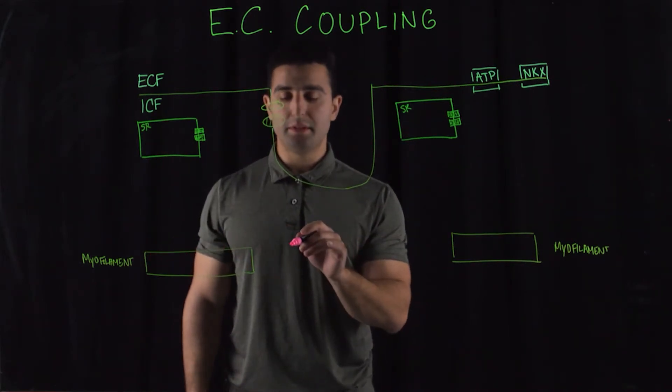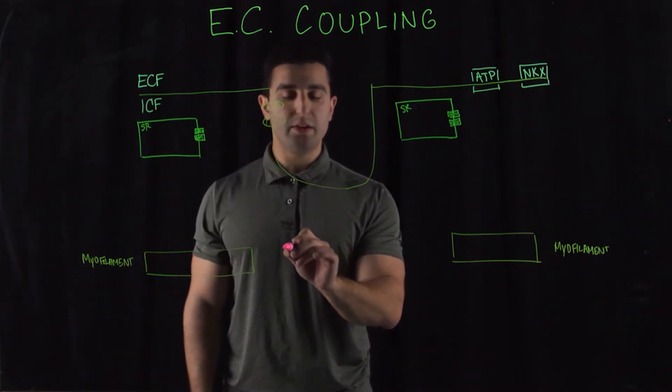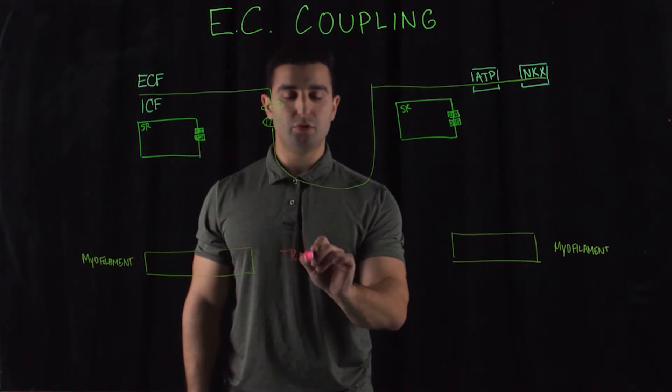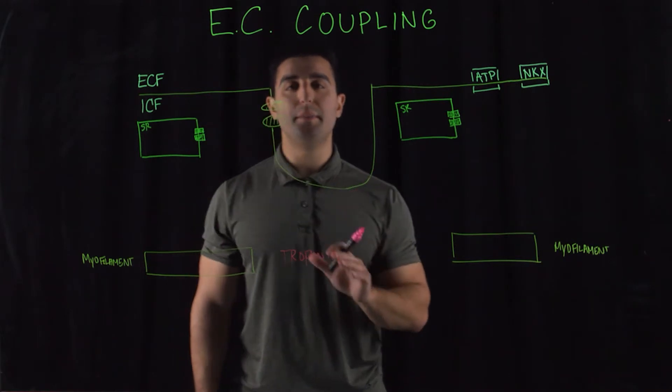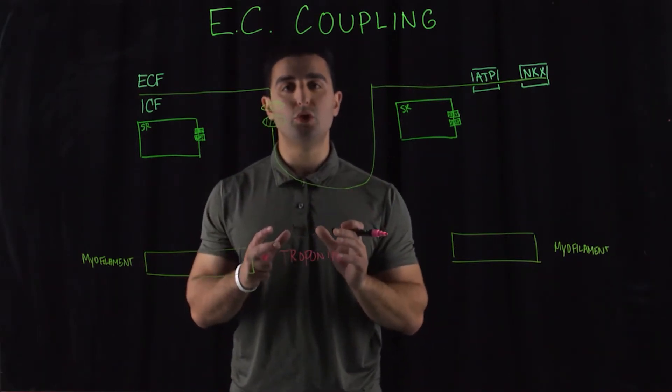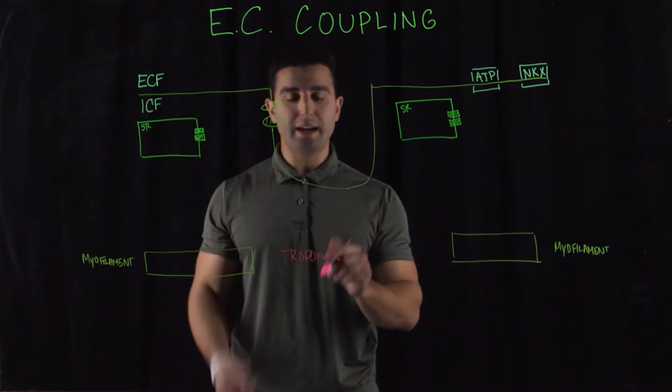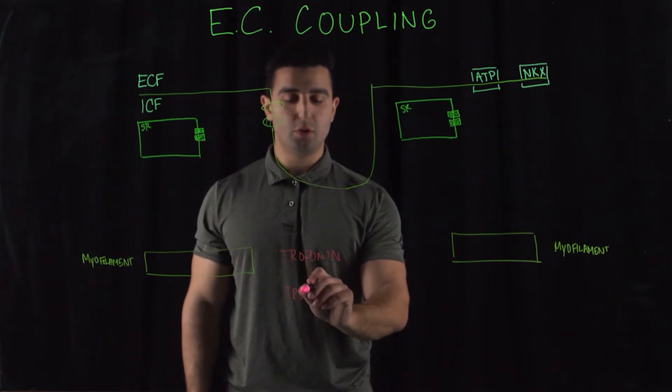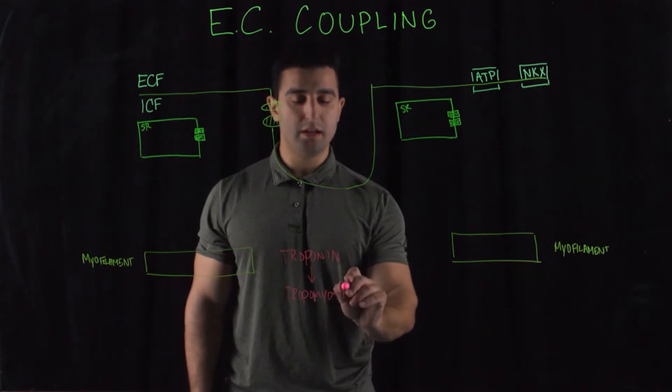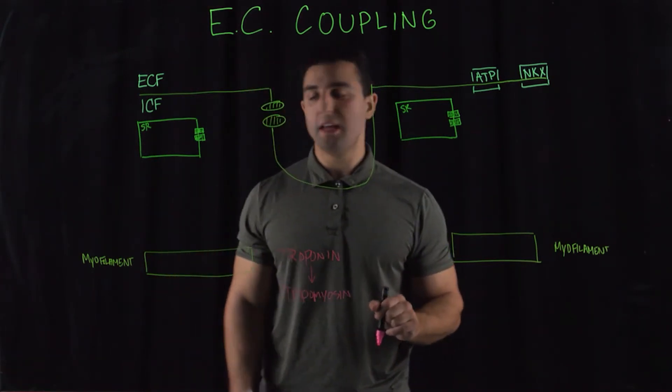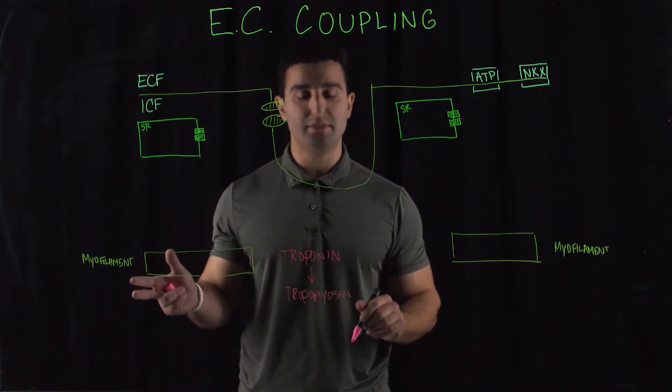In the myofilament region here, there was a carrier protein called troponin. Troponin was a carrier protein where the calcium binds to, creates this calcium-troponin complex, which activates the tropomyosin.